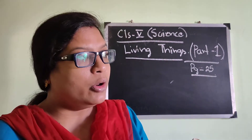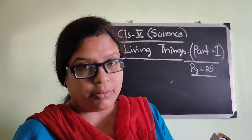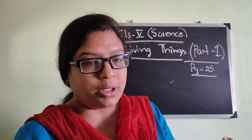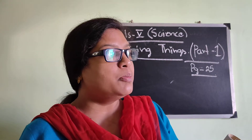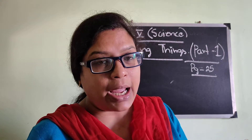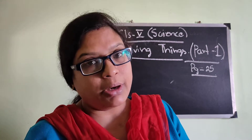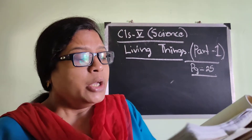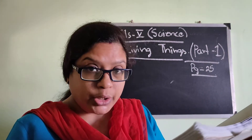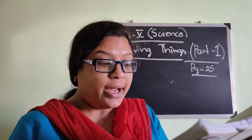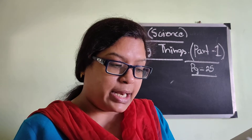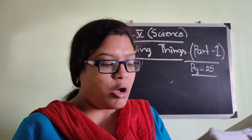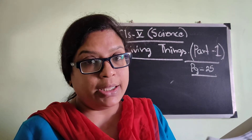Living things include plants and animals both. Both categories — those who are having life — are known as living things. You can see many things around you. There are various kinds of plants and animals, and there are also a large number of non-living things.